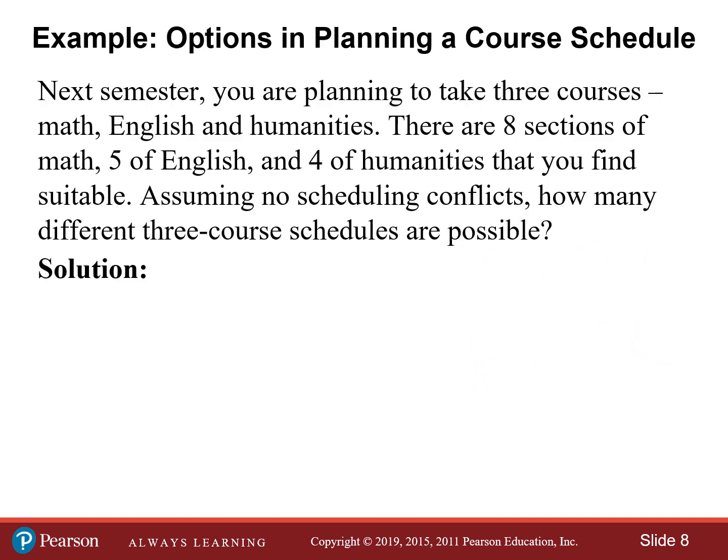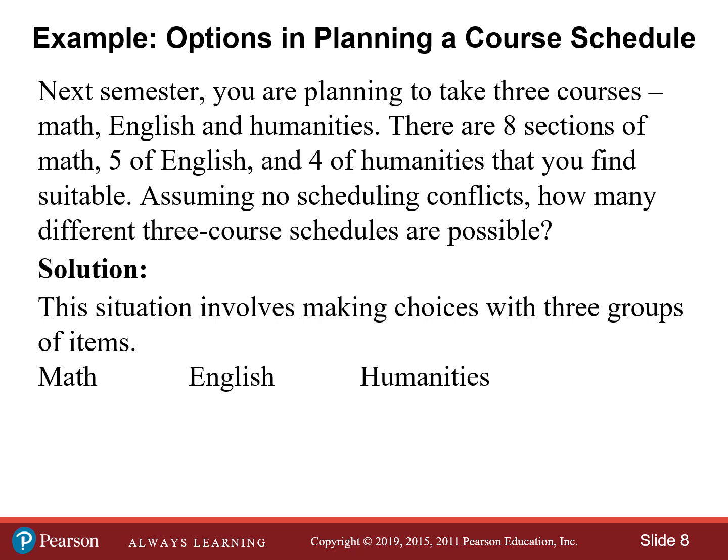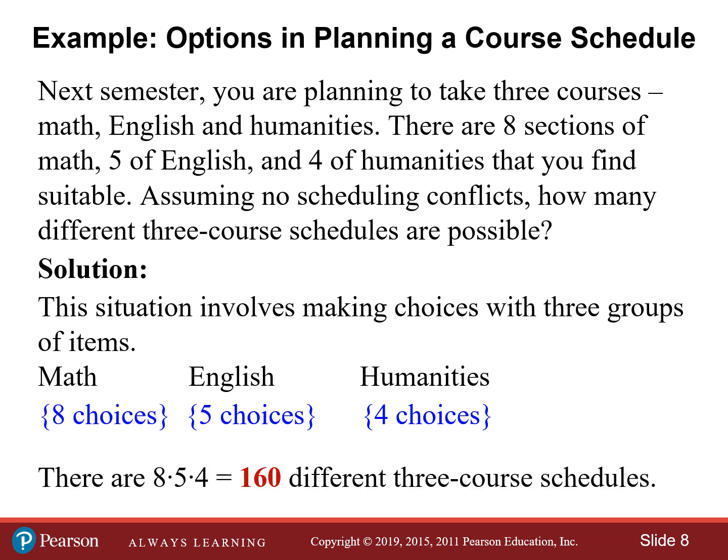Here's another example. Let's say that next semester you're planning to take three courses: a math, an English, and a humanities course. There are eight sections of math, five of English, and four of humanities that you may find suitable. Assuming there won't be any scheduling conflicts, how many different three-course schedules are possible? According to the fundamental counting principle, you multiply eight times five times four, which comes out to 160 different three-course schedules.